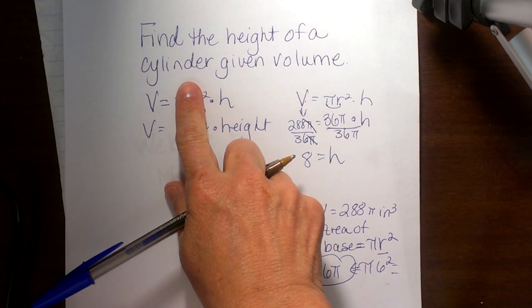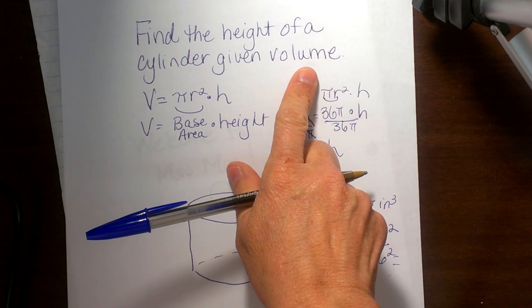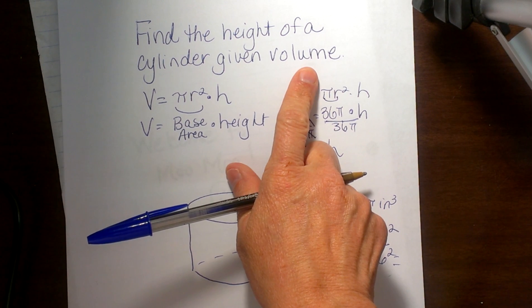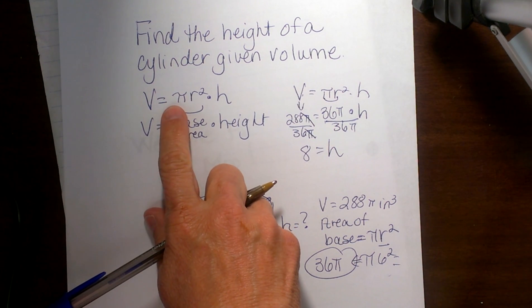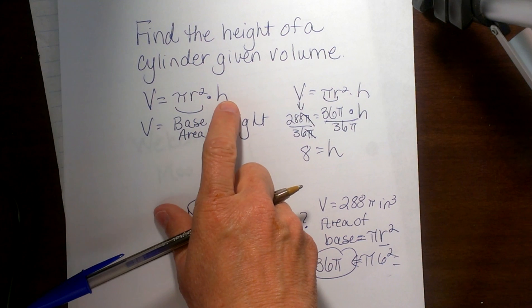How to find the height of a cylinder given the volume. So first of all we need to know what is the volume formula for a cylinder. The volume formula is equal to pi r squared times the height.